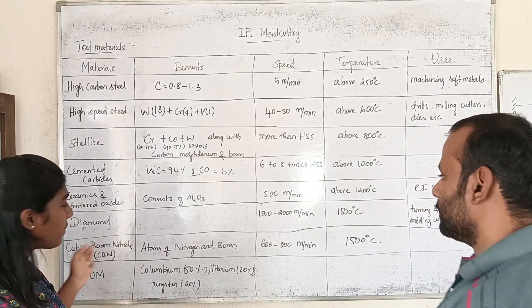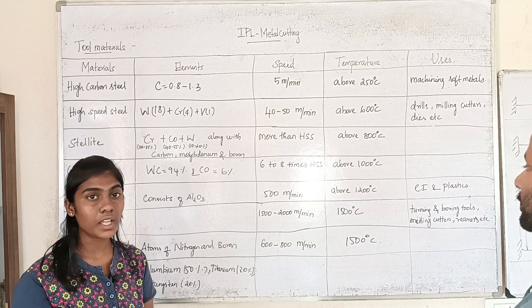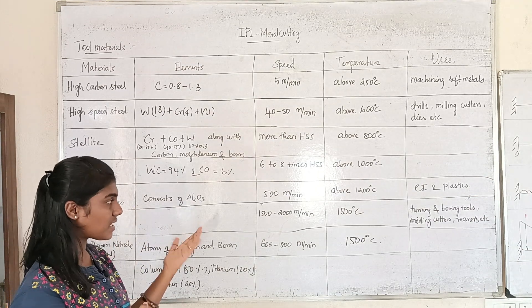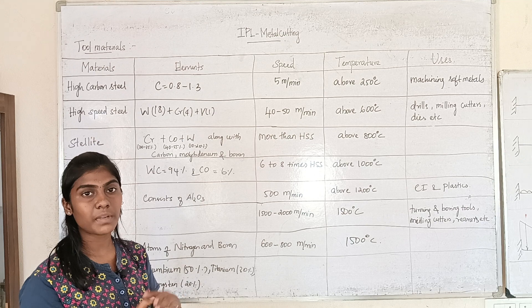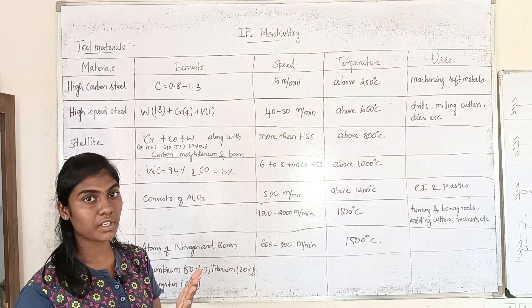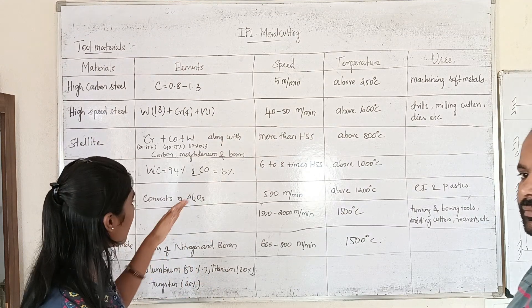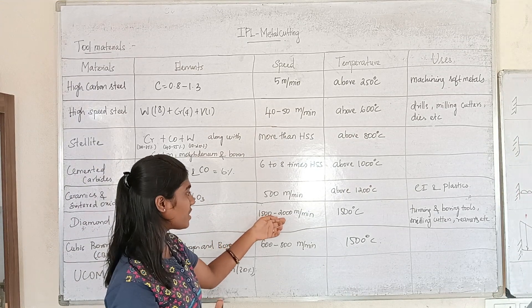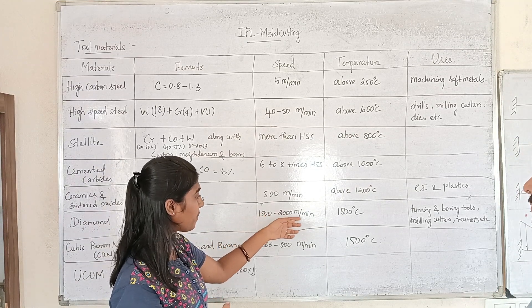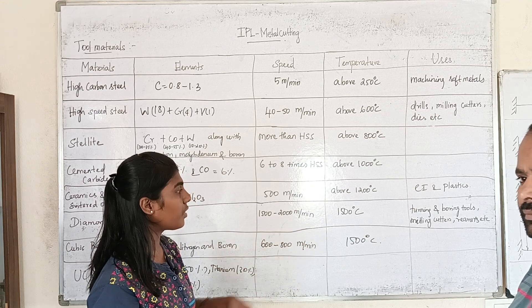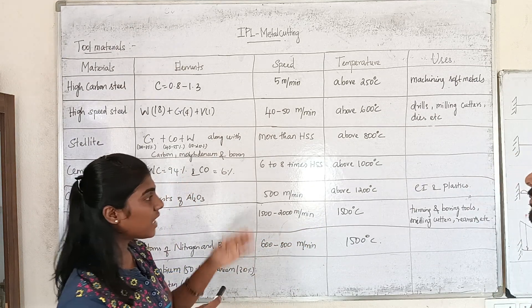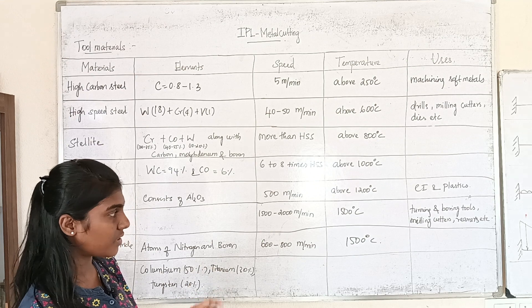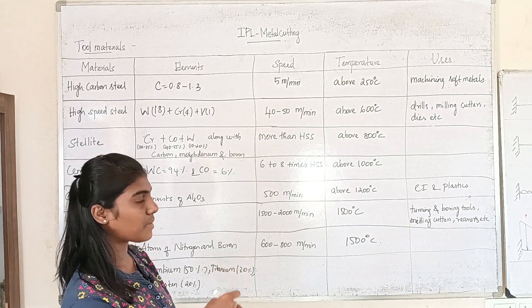The diamond is the hardest substance. It is brittle. The thermal conductivity is high. The speed is about 1500 to 2000 meters per minute. Temperature is about 1500 degrees Celsius. It is used for turning and boring tools.